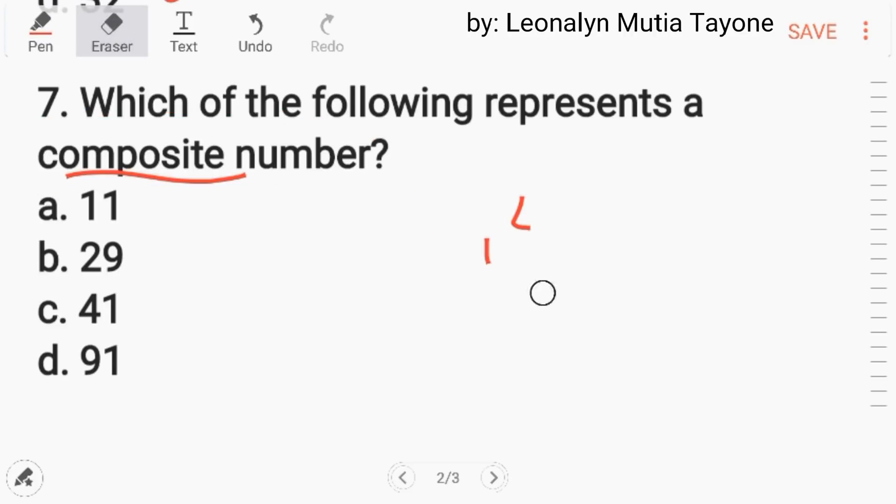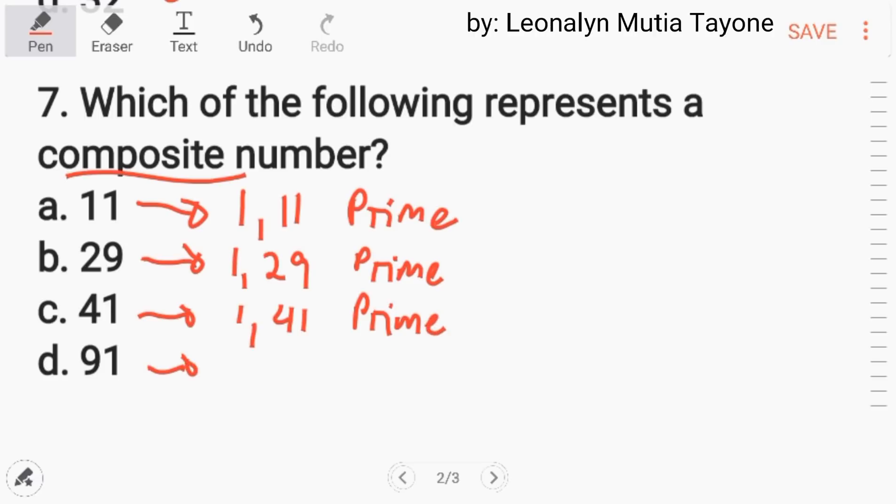Now dito sa choices, ang tanong dito is which of the following represents a composite number? Letter A, 11. 1 at saka 11 lang ang factors niya, so this is prime number. Letter B, 29. 1 at saka 29 lang ang factors nito, so prime number din dito. Letter C, si 41. 1 at saka 41 lang ang factors niya, so prime din siya. Letter D, 91. Aside sa 1 at saka 91, 7 at saka 13 din ang factors niya. So ito yung composite number. Letter D ang sagot.